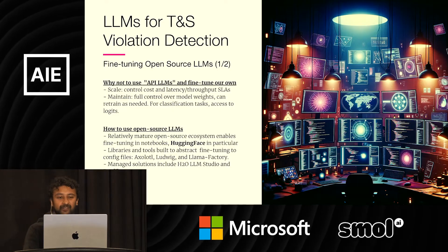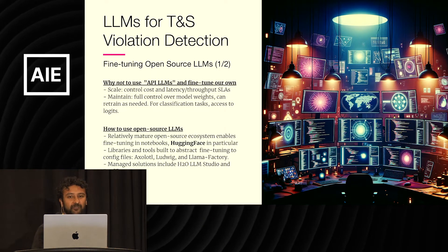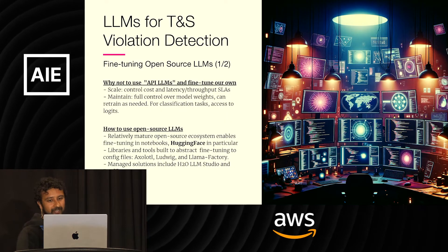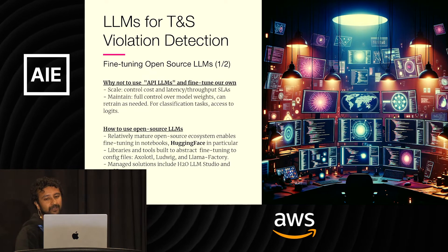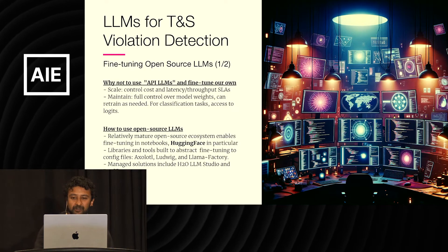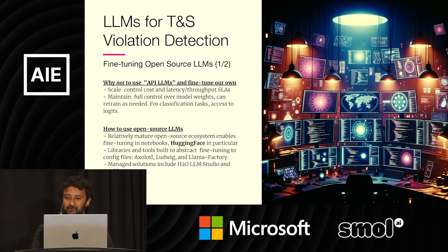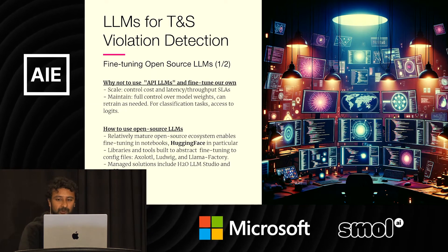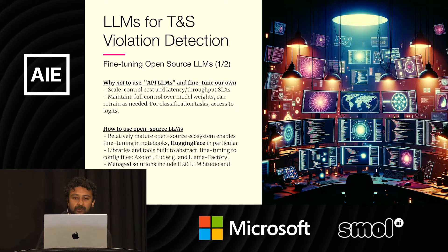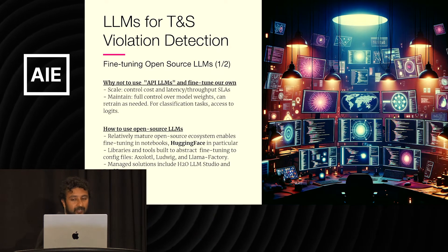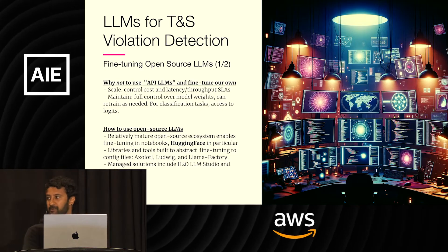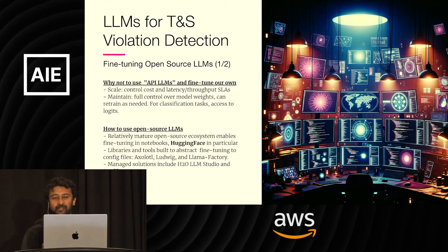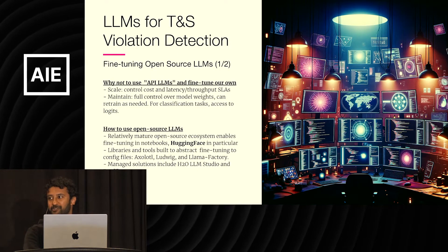One fundamental reason is scale. Tinder has a huge real-time volume of profile interactions, and hitting OpenAI APIs that often doesn't scale in terms of cost, latency, and throughput. The other reason is maintainability. By fine-tuning our own models, we have full control over the model weights and can re-fine-tune when production performance inevitably degrades without needing to worry about changes in the underlying base model. One additional benefit for classification tasks is that we have access to the output probability distribution, which means we can create a confidence score for the prediction, like in a traditional machine learning model.